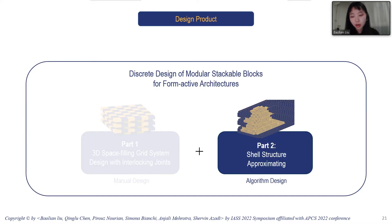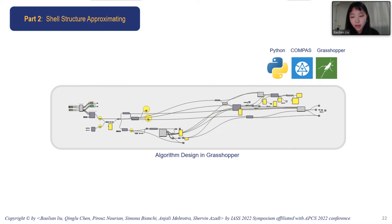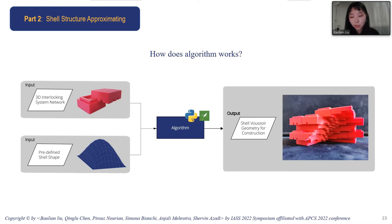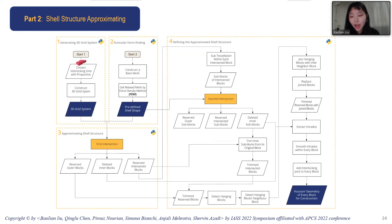The second part of the algorithm design is for shell structure approximation, aiming to turn the grid into the topology of a shell structure. The whole algorithm is developed in Grasshopper using Python components, Grasshopper components, and the Compass library. By taking the design grid as one input and a predefined shell shape as another, the algorithm can automatically generate every block geometry needed for construction of the shell structure.